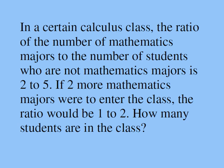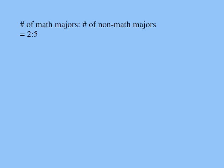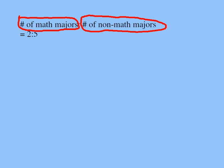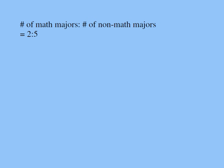We're going to solve this problem algebraically. We'll have to come up with an equation. So let's see what we mean by ratio first. According to the question, the number of math majors to the number of non-math majors is 2 to 5. Now let's make sure we understand what it means.